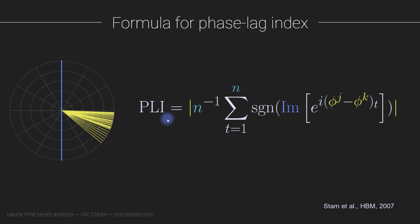The phase lag index is not the only method for computing synchronization based on ignoring phase lag differences of zero or pi. There are others: the de-biased PLI, the weighted de-biased PLI, phase slope index, imaginary coherence, and corrected imaginary coherence. I'm focusing on the PLI because it's the simplest to explain and understand. Once you gain intuition about this formula, all these other methods are more or less slight variations on the same principle.